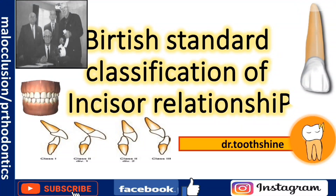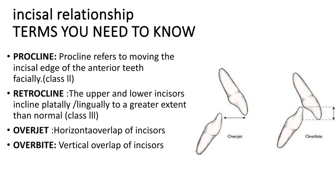Hello everyone. In this video we will discuss the British Standard Classification of Incisor Relationship. There are a few terms you need to know: number one is procline, retrocline, overjet, and overbite.